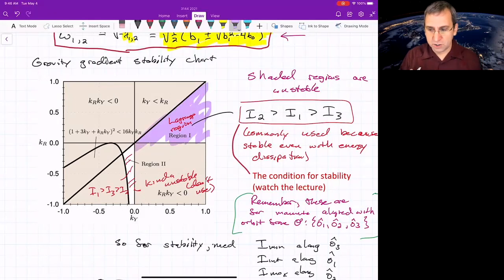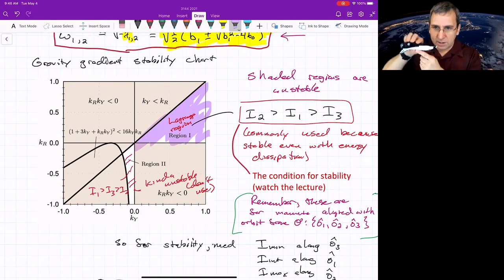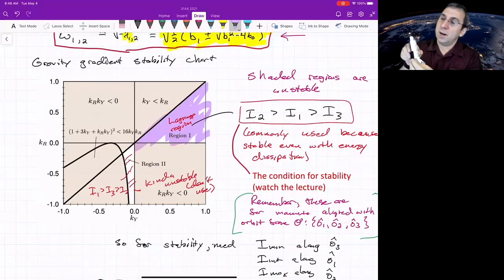Because if you were to add in energy dissipation, it makes this stable. And this sort of connects back to just the pure rigid body, free rigid body rotation. We said that about the intermediate axis, that would be unstable. About the minimum axis, that's technically stable by our simple analysis. And the maximum axis, that would be stable.